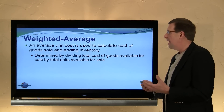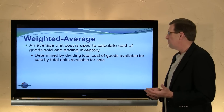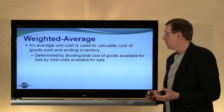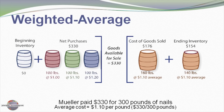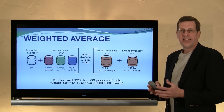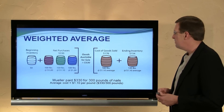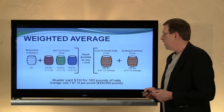Finally, the weighted average method is a blending of these two approaches. An average unit cost is used to calculate cost of goods sold and ending inventory, determined simply by dividing total cost of goods available for sale by total units. In our nail example, $330 spent on 300 pounds gives an average cost of $1.10 per pound. With 160 pounds sold at $1.10, cost of goods sold is $176, and the remaining 140 pounds at $1.10 gives $154 in ending inventory. I'd encourage you to look at the textbook, where this illustration is explained again, to really think through the mathematics of FIFO, LIFO, and weighted average.